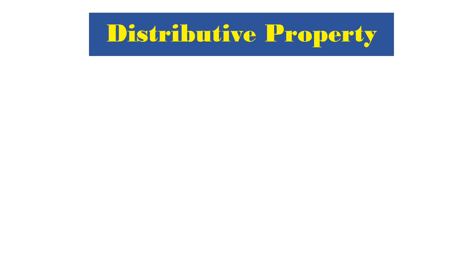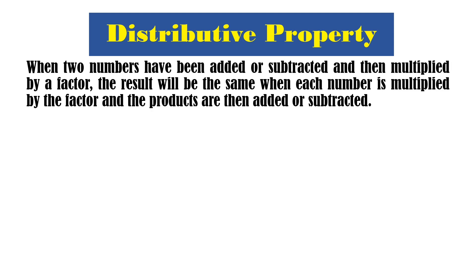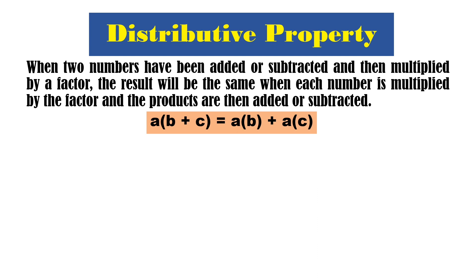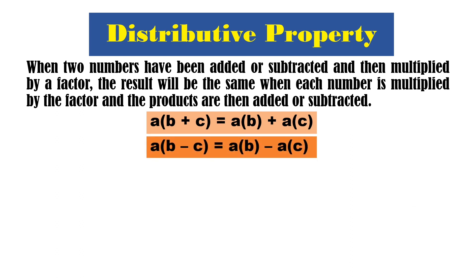Next is the distributive property. When 2 numbers have been added or subtracted and then multiplied by a factor, the result will be the same when each number is multiplied by the factor and the products are then added or subtracted. So kapag dinistribute natin si A kay B at C, makukuha natin is A times B plus A times C. And then A times the quantity of B minus C gives us A times B minus A times C.